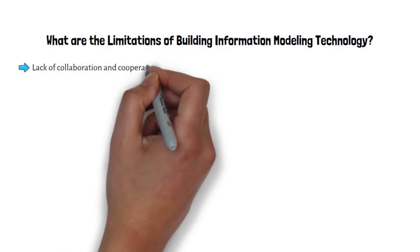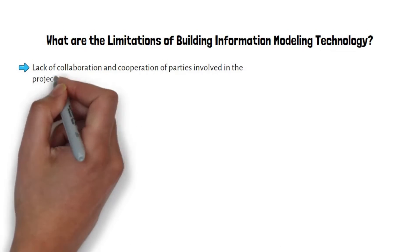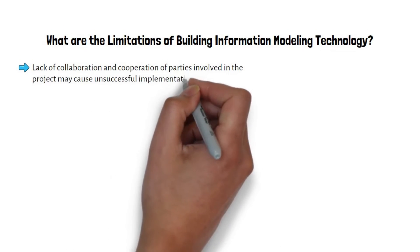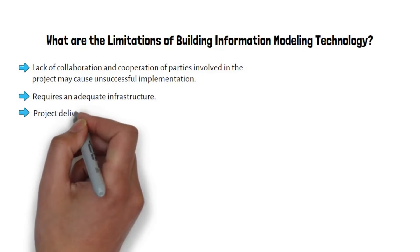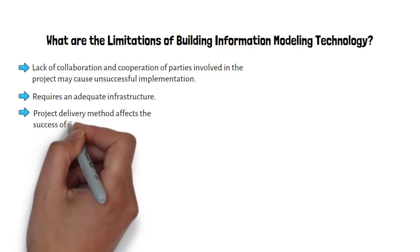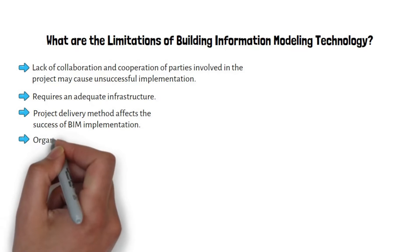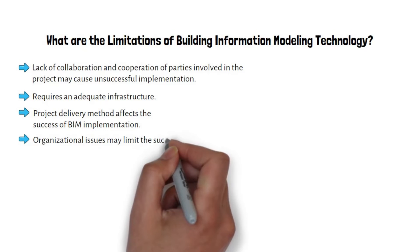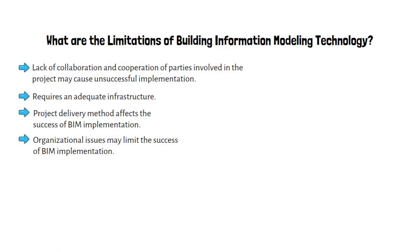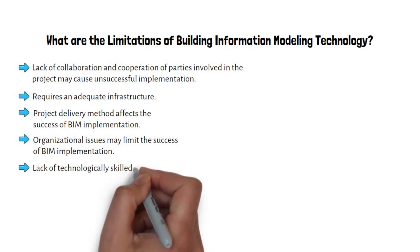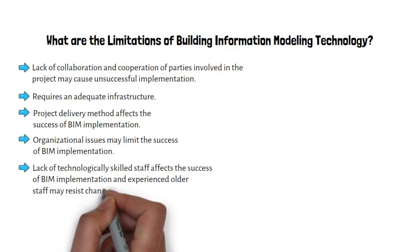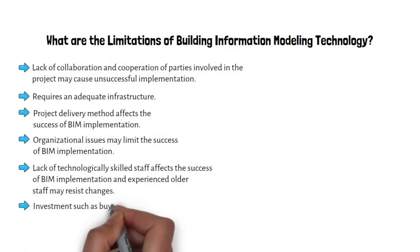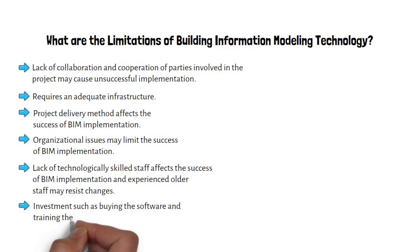What are the limitations of BIM technology? Lack of collaboration and cooperation among parties may cause unsuccessful implementation. Adequate infrastructure is required. The project delivery method affects BIM implementation success. Organizational issues may limit success, and a lack of technologically skilled staff is a challenge. Experienced older staff may also resist changes associated with BIM adoption.